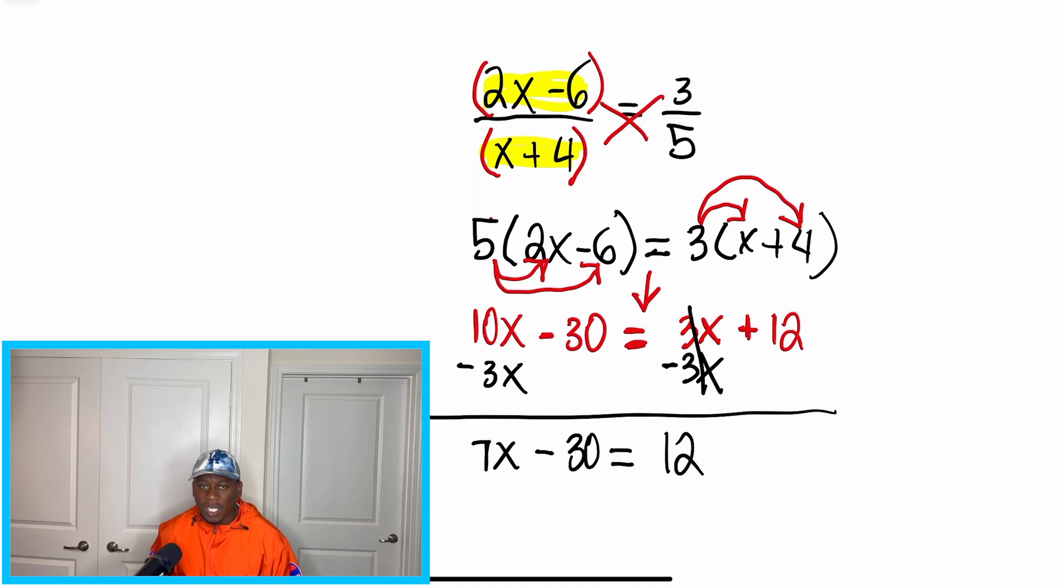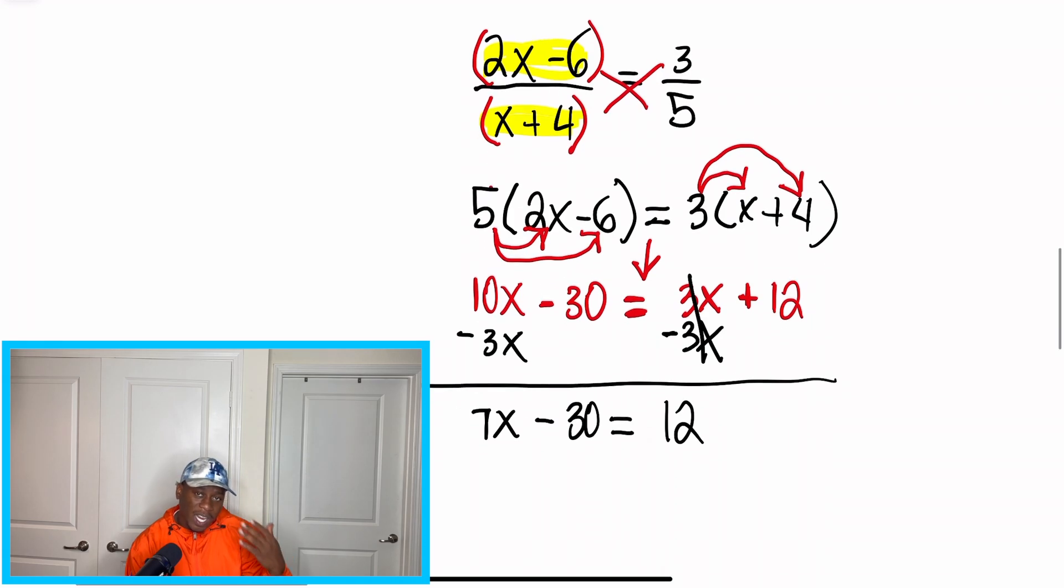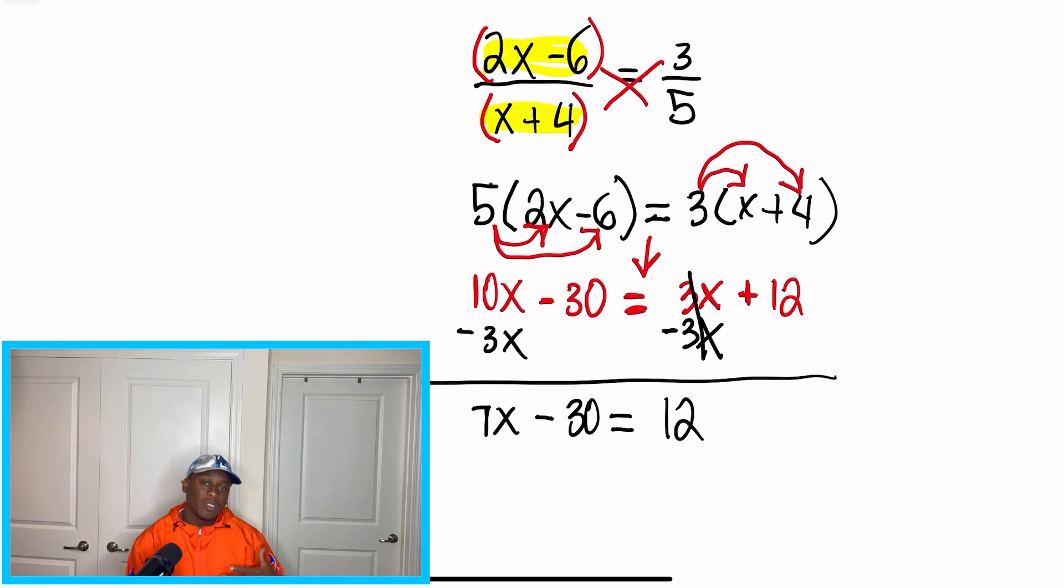7x minus 30 is equal to 12. Now, we're going to do the same thing with 30 and 12 now. But the difference with moving 30 is there's a negative sign out in front of 30. So if we want to cancel that out now, we're going to have to add 30 to itself. So just remember, we're doing the opposite. If it's a negative 30, we're going to add 30 to it to cancel it out.